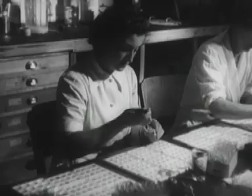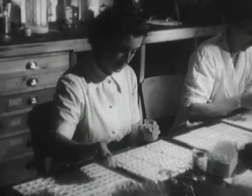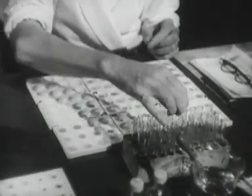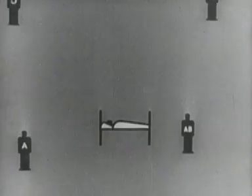From studying these results, it was found that there are four different kinds of human blood, or four blood groups. These are called Group O, Group A, Group B, and Group AB.